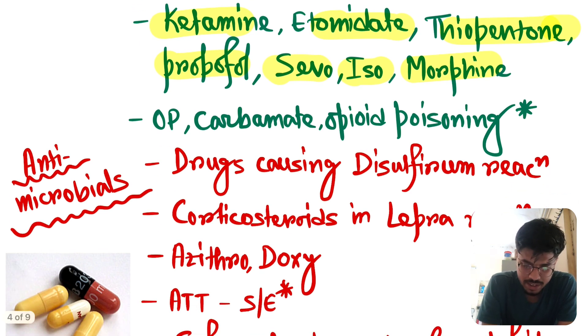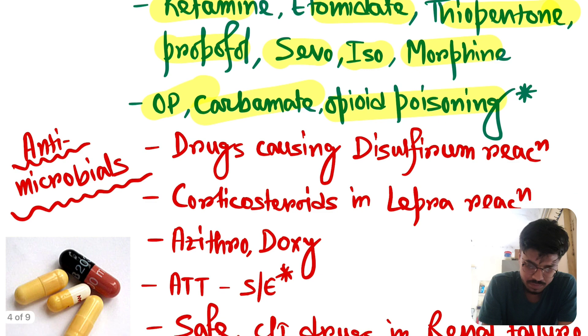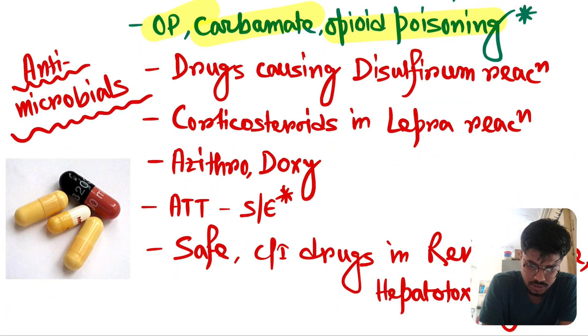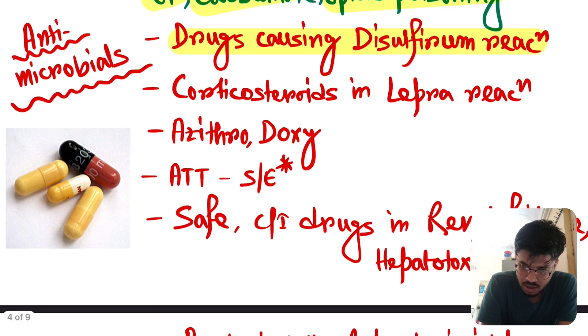Now, very high yield topic. OP poisoning, carbamate poisoning, opiate poisoning. Especially OP poisoning. Very very important. In antimicrobial drugs, drugs causing disulfiram reaction. Very very important. In every one to two years, this question is repeated.